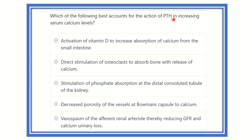Which of the following best accounts for the action of parathyroid hormone in increasing serum calcium level? We know that parathyroid hormone increases serum calcium by different pathways, but we have to find out the best pathway. Parathyroid hormone acts on different parts of the body such as bone, kidney, and intestine, and we need to find the best way it increases serum calcium level.